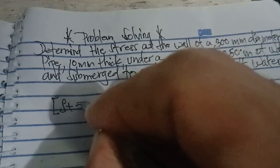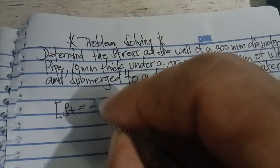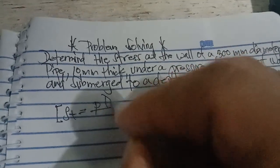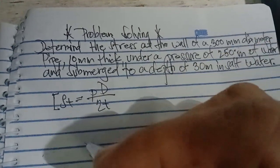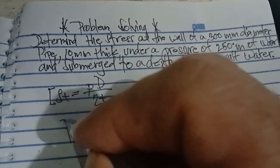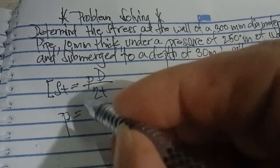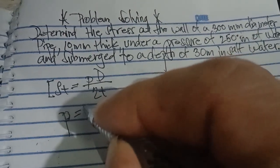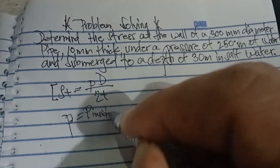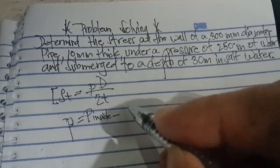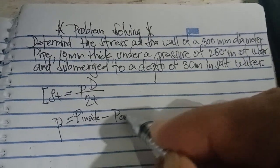The formula is T equals pressure times diameter over 2T. The net pressure P is equal to P inside minus P outside.